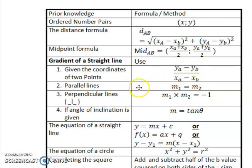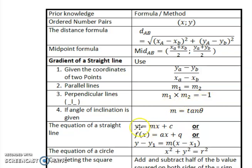If I know the lines are parallel, I know that gradient 1 is equal to gradient 2. If they are perpendicular lines, I know that the gradient of line 1 multiplied with the gradient of line 2 will give me a result of negative 1. And the fourth way is if they gave me the angle of inclination — the angle that the line makes with the X axis, always in a positive direction.